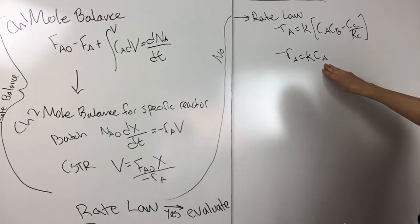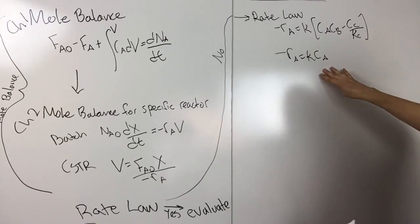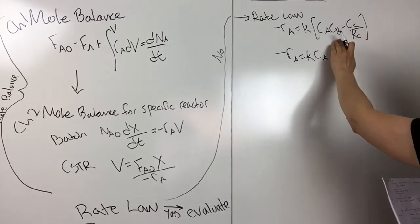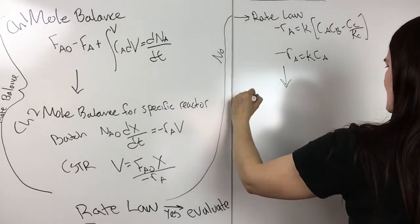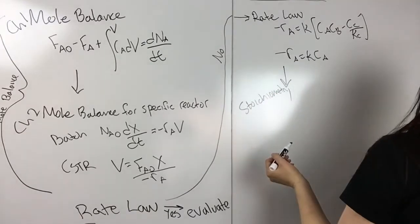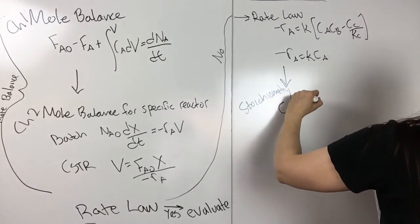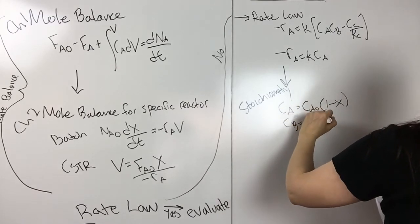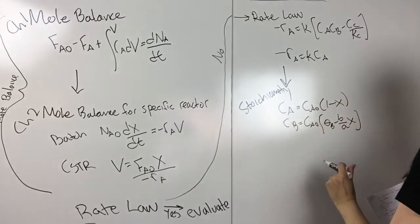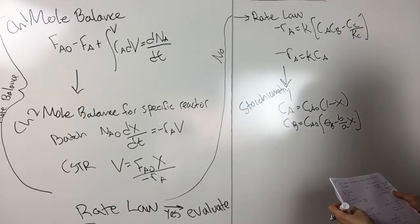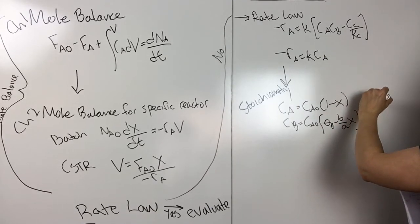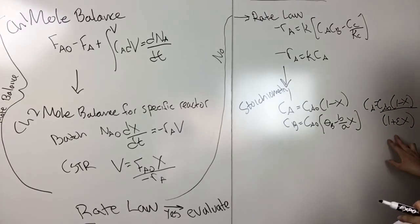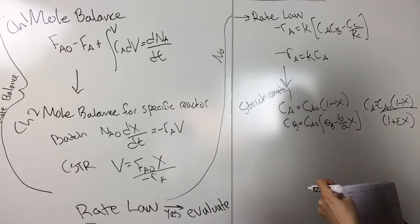And then if you don't know the rate law, and you have to go through and evaluate it like this, then you also need to do some stoichiometry. So you need to write the equations for CA, CB, CC, etc. So, stoichiometry. And then, so for instance, that would be the CA equals CA naught, one minus X. CB equals CA naught, theta B minus B over A X. And remember, this is for the no volume change. And so if, for instance, if you had a volume change, then it would be CA, CA naught, one minus X over one plus epsilon X. So just make sure you're using the right concentrations depending on what you have.